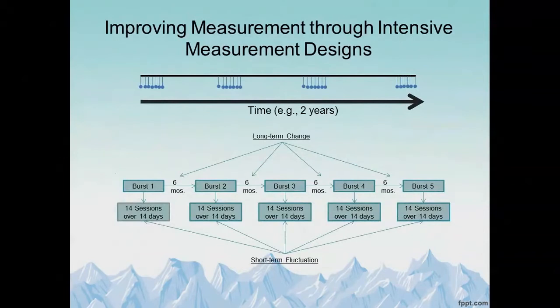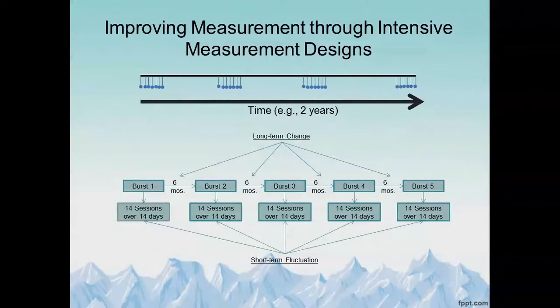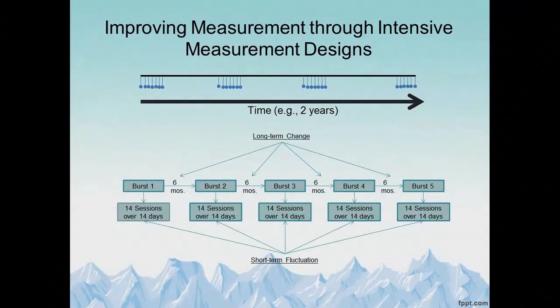One approach to better address these biases and get at true level is to implement an intensive measurement design or measurement burst design — designs where you have many closely spaced assessment points, repeated at wider intervals over time. This accounts for within-person variability to get a more precise true level of the person that's not dependent on their situational or contextual factors. By repeating these intensely measured bursts over longer intervals, you can look at long-term change in measures more reflective of the person's actual level.